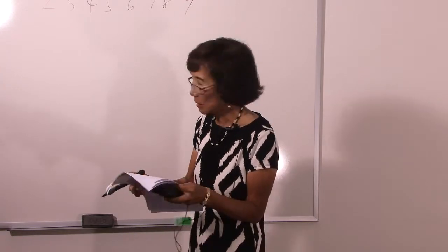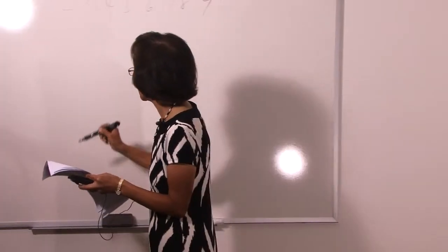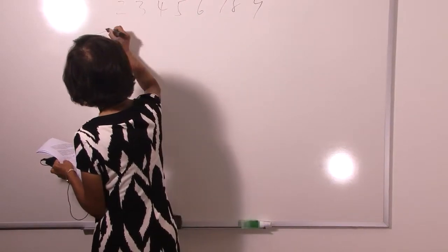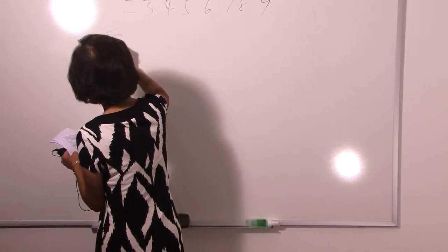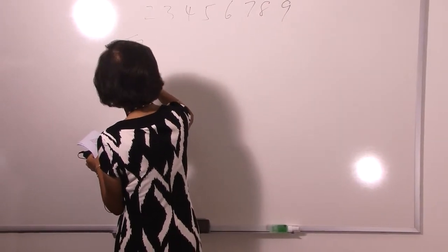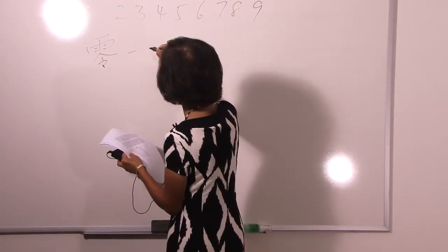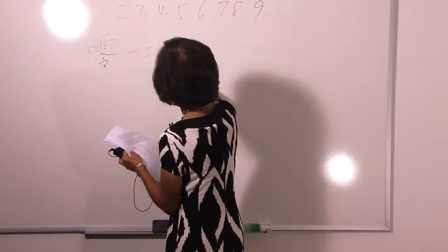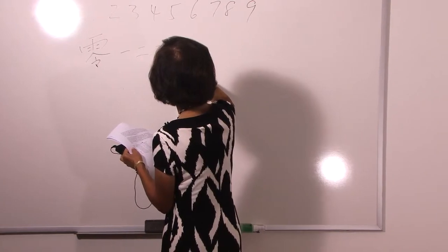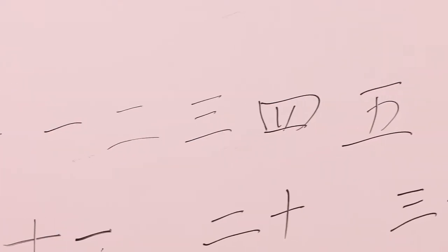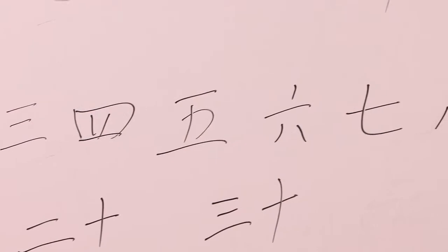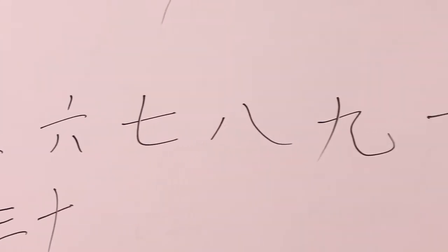Now, in Chinese, the zero is pronounced Ling. Instead of a symbol, it is really a character — Ling — that is zero. One is pronounced Yi; one single line. Two is Er. Three is San. Four is Si. Five is Wu. Six is Liu. Seven is Qi. Eight is Ba. Nine is Jiu.